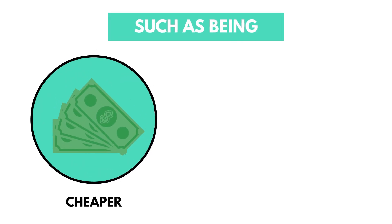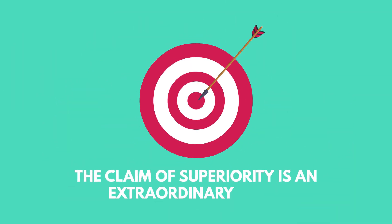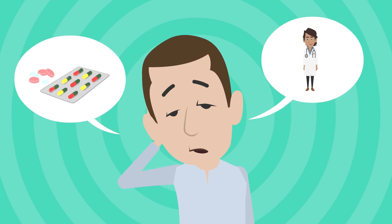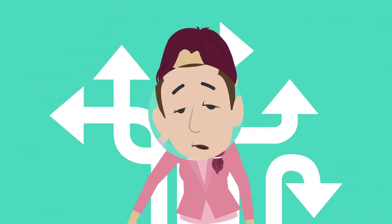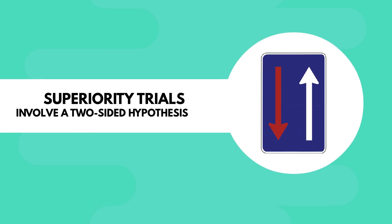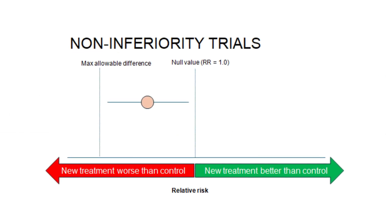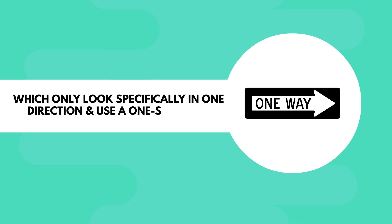The claim of superiority is an extraordinary claim, and as the saying goes, extraordinary claims require extraordinary evidence. Even if we think that a treatment is superior to another, we can't just test that narrative only — we need to look at both sides of the picture carefully. For this reason, superiority trials involve a two-sided hypothesis test, requiring a larger sample size compared to non-inferiority trials, which only look specifically in one direction and use a one-sided test.